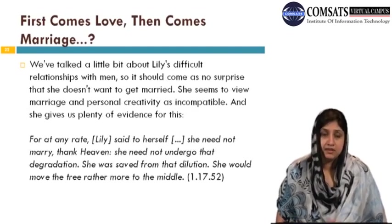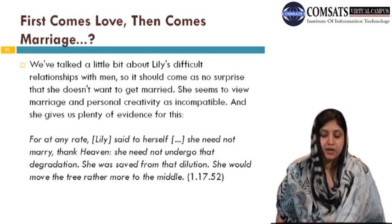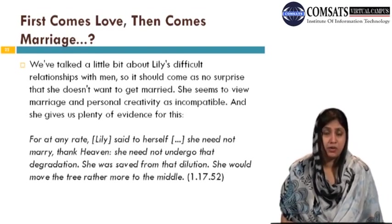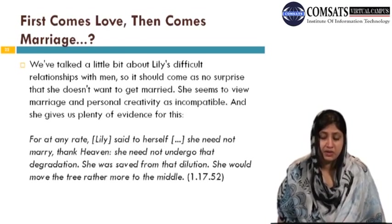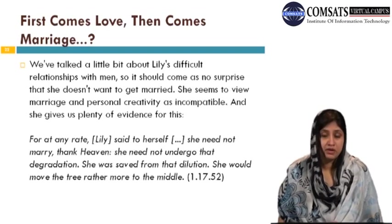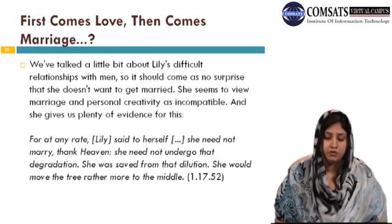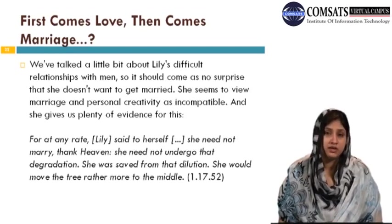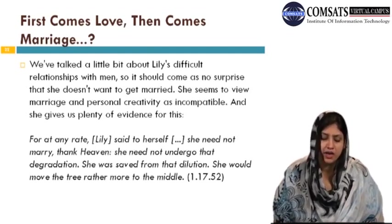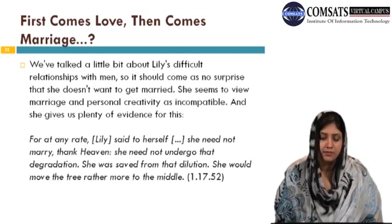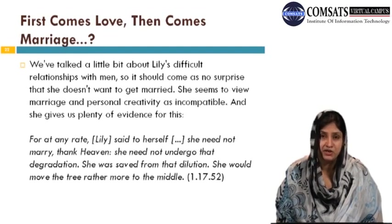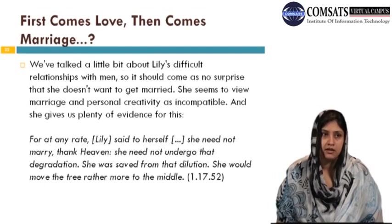'First comes love, then comes marriage' is a philosophy Lily offers. She doesn't want to get married although she wants to be loved — she seems to view marriage and personal creativity as incompatible. Far at any rate, Lily said to herself, she need not marry — thank heaven she need not undergo that degradation, that dilution. She would move the tree rather more to the middle. She has liberty; she thinks that being married is serving men and obeying them all the time.